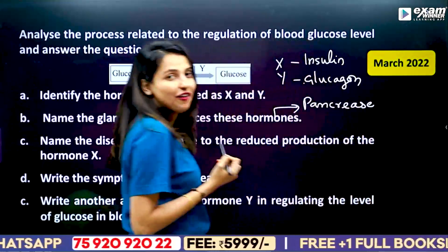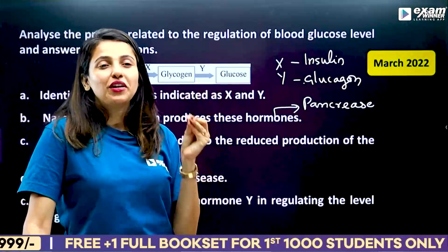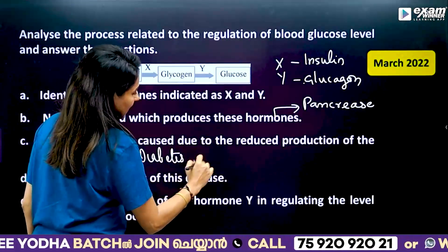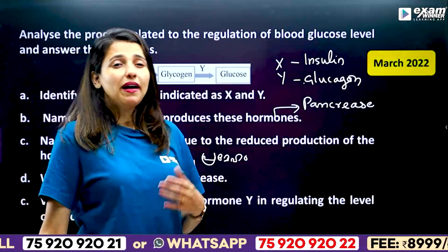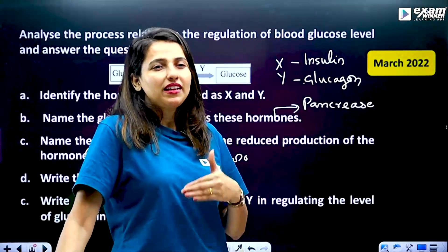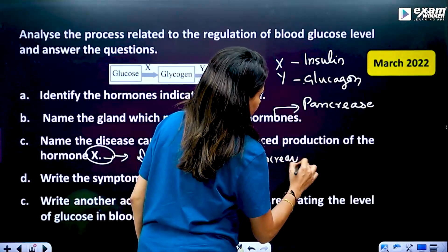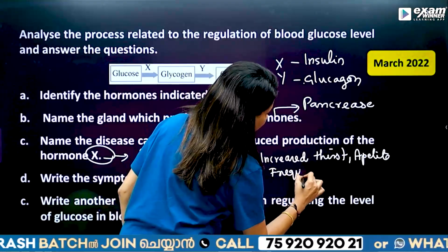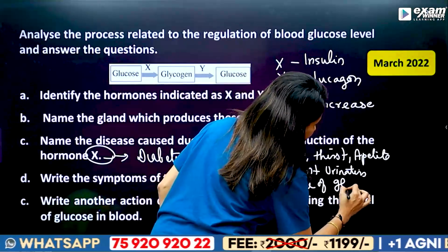We have beta cells and alpha cells in the pancreas. Name the disease caused due to the reduced production of hormone X. A small amount of insulin leads to Diabetes. The symptoms of this disease: glucose is detected in blood, frequent urination, thirst and appetite increase, and presence of glucose in urine.